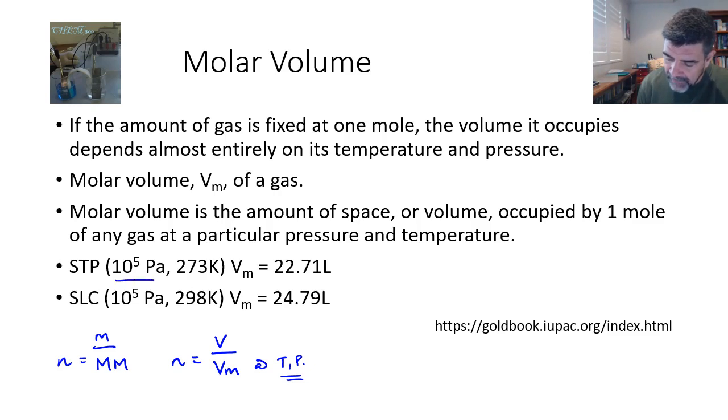Standard temperature and pressure is now defined as 100 kilopascals or 10 to the 5 pascals and 273 Kelvin. Now this was updated in 1982 from what used to be one atmosphere of pressure, which was about 101.3 kilopascals, so now the standard is 10 to the 5 pascals or 100 kilopascals for both standard temperature and standard laboratory conditions.